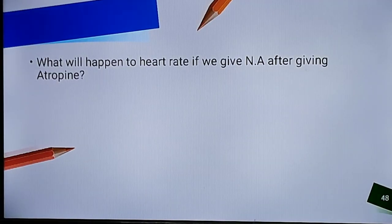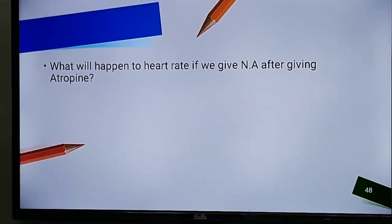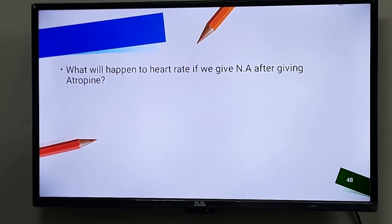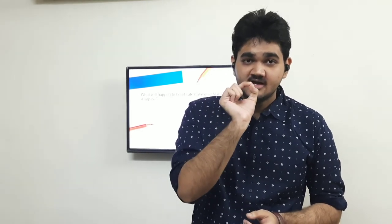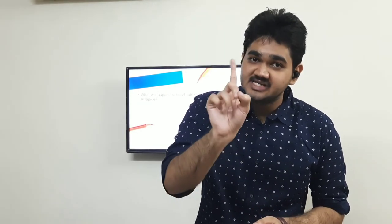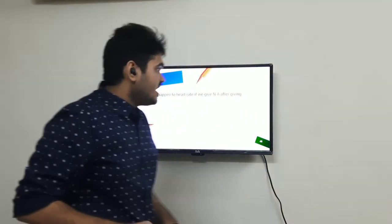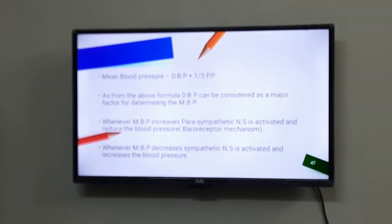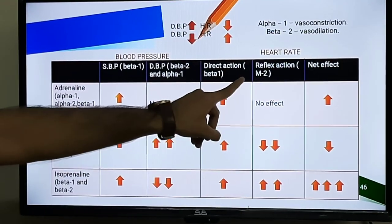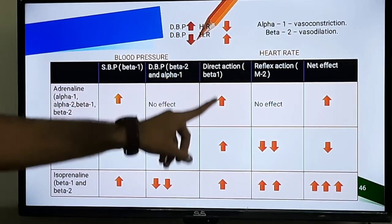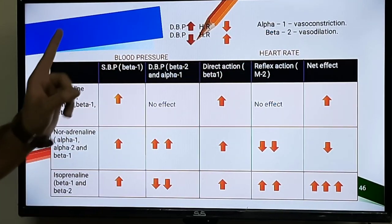A question: what will happen to heart rate if we give noradrenaline after giving atropine? Atropine is a non-selective muscarinic receptor blocker. If it blocks the M2 receptor, then whatever acetylcholine is released will fail to work on the M2 receptor. So if we give atropine first and then give noradrenaline, this reflex action will not take place because M2 has been blocked. Therefore, there will be just an increase in heart rate.